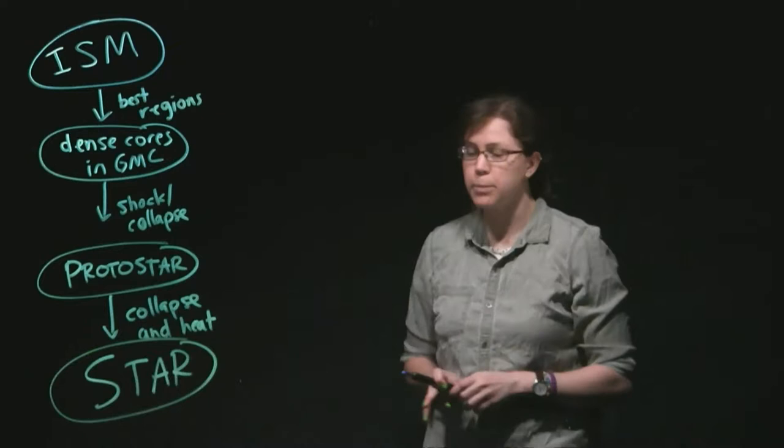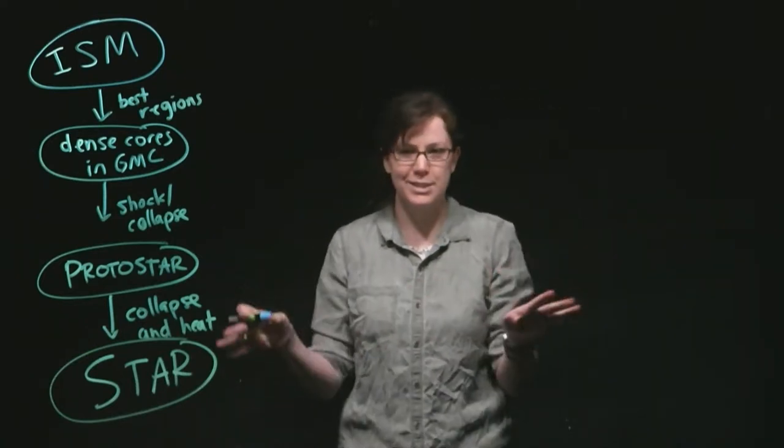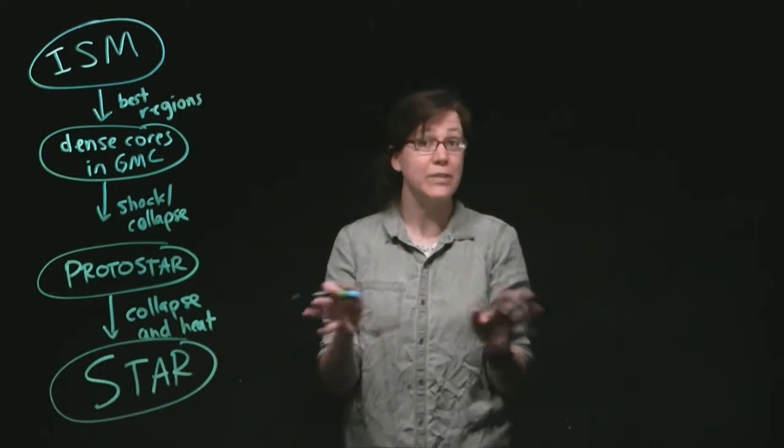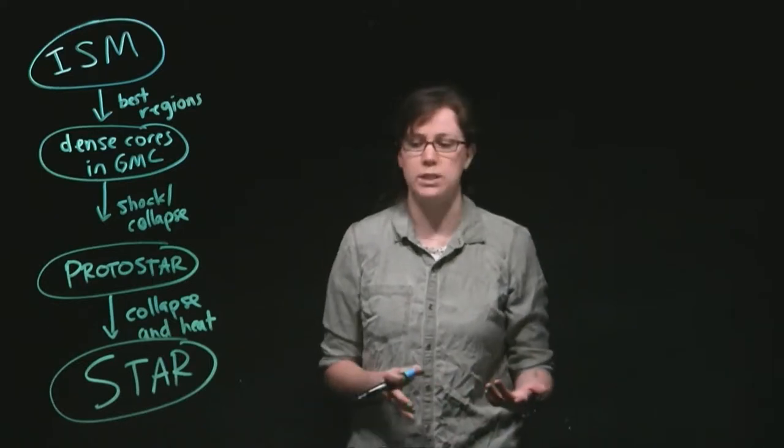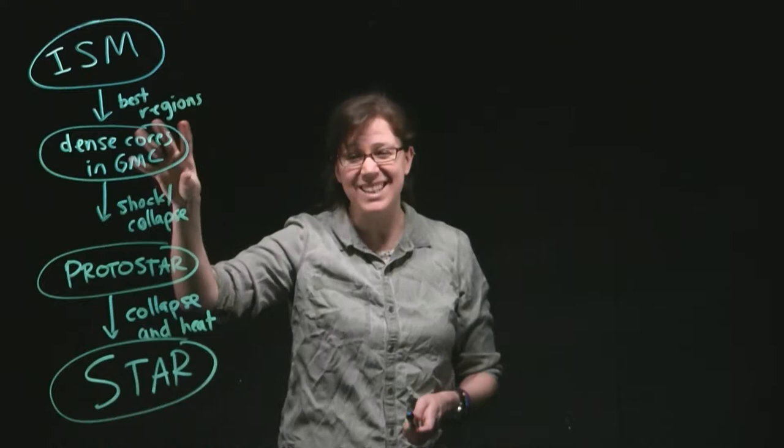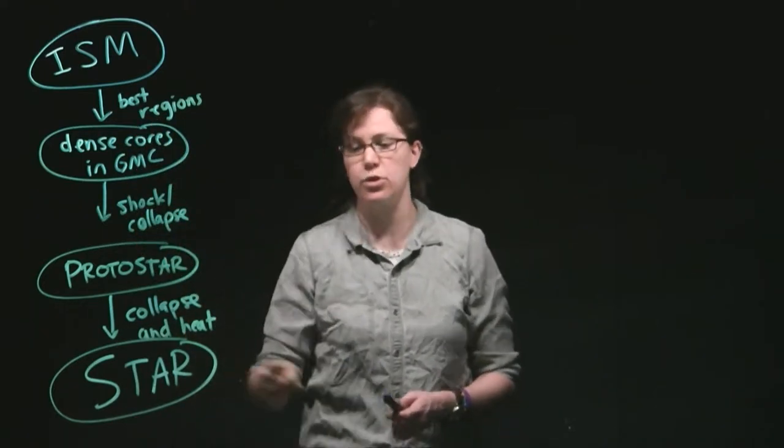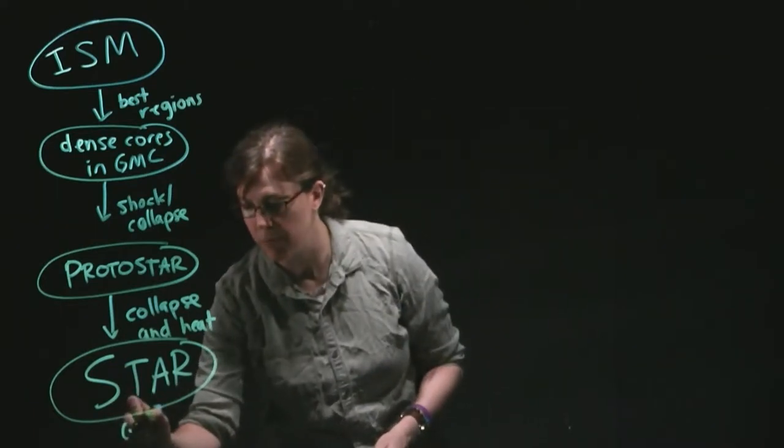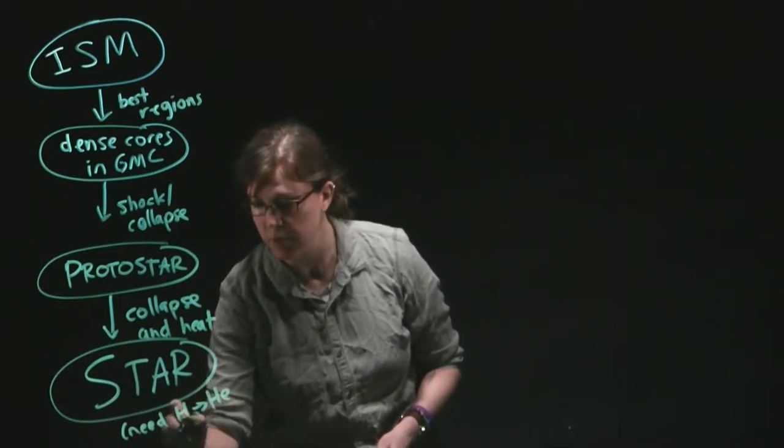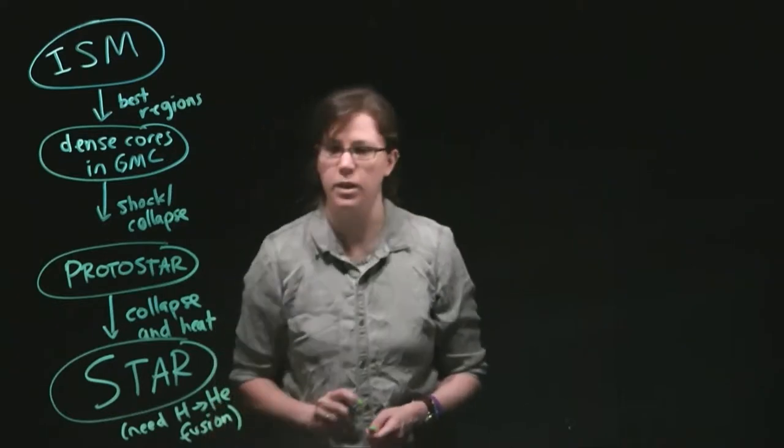So that's sort of the very basics of star formation. There's lots more details that we talked about in the lecture videos, and there's even more that we didn't mention that are outside the scope of this class. But you need to have stuff in a dense enough region to be able to collapse down to form a protostar, and then you're able to turn on hydrogen to helium fusion. Remember, we need hydrogen to helium fusion to call these a star.